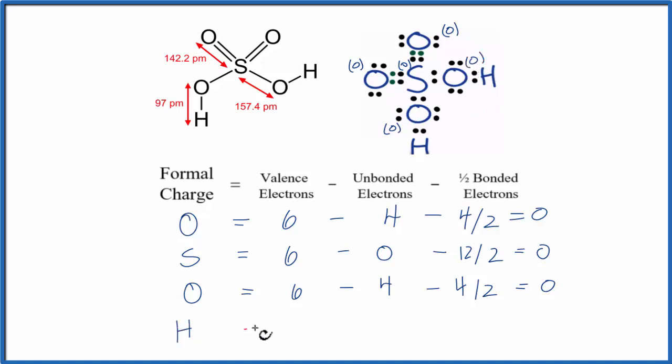And finally, hydrogen, group one on the periodic table. All the valence electrons are involved in a chemical bond, so we don't have any unbonded. And then we have two in the chemical bond divided by two. That equals zero.